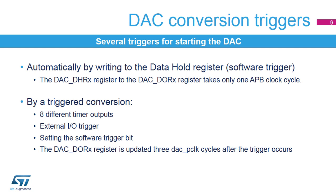DAC output conversion is started by writing to the data hold register using software. Eight different timer outputs, an external I/O, or software can trigger a DAC conversion. When a software trigger is used, the content of the data hold register is transferred to the data output register after one APB clock cycle. When a trigger occurs in trigger mode, this transfer takes three APB clock cycles.